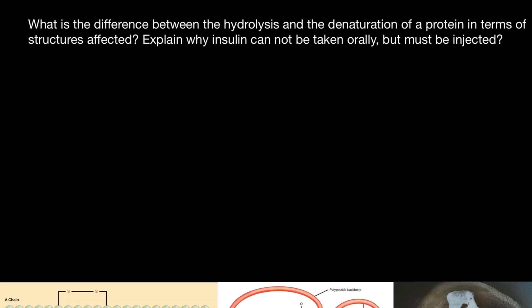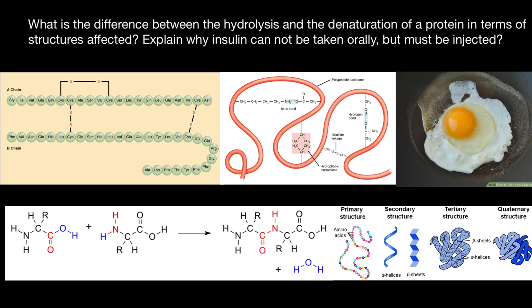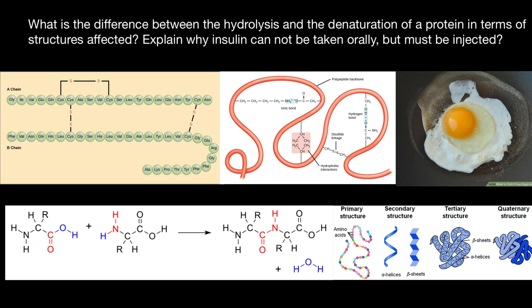Take a look at this picture. What we see here is an egg which is partially fried. Here we see the part which is still raw, and here is the white which is denatured. So what happened with this part of the egg?